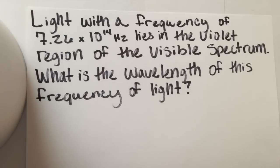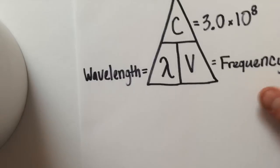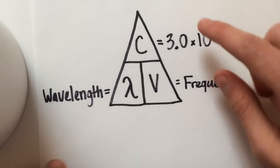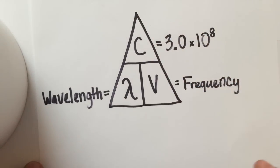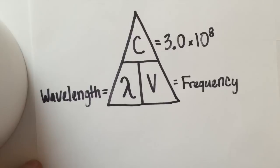So we're looking for wavelength. If we're looking for lambda, which is wavelength, we have C over V. So we're going to divide the speed of light by our frequency.